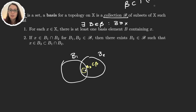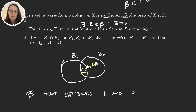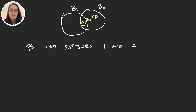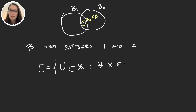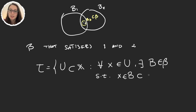If I have a collection B that satisfies these two properties — I already have all these sets — can I generate a topology from them? We can. We define a topology T as all subsets U of X such that for every x that is an element in U, there exists some B in our basis B such that x is an element of B and B is a subset of U.